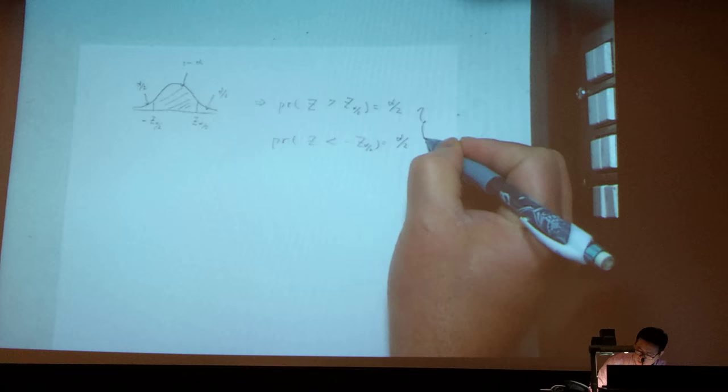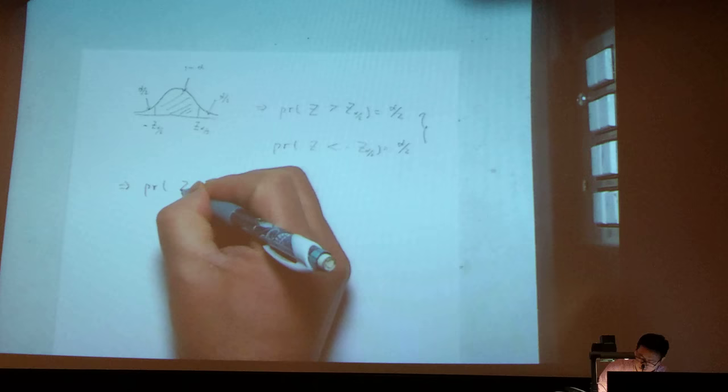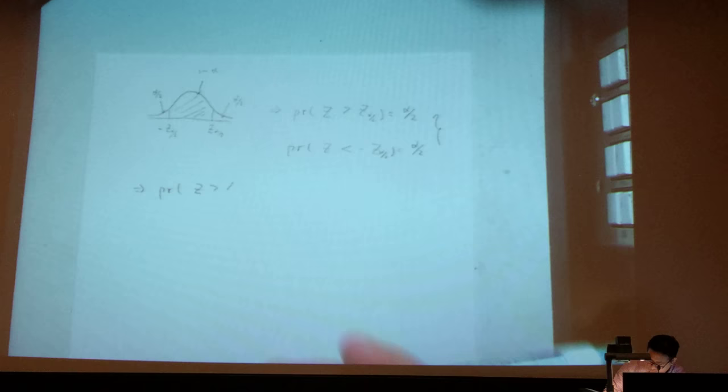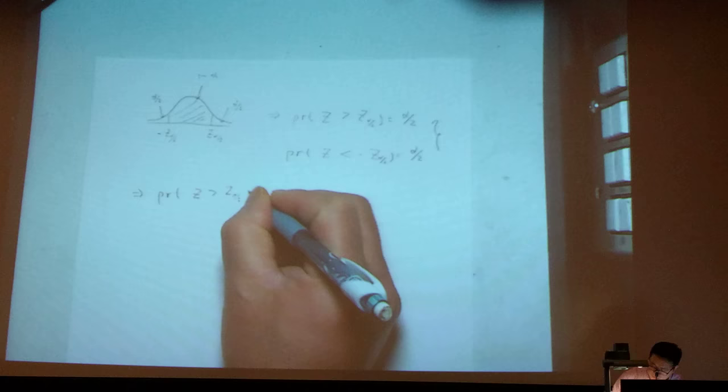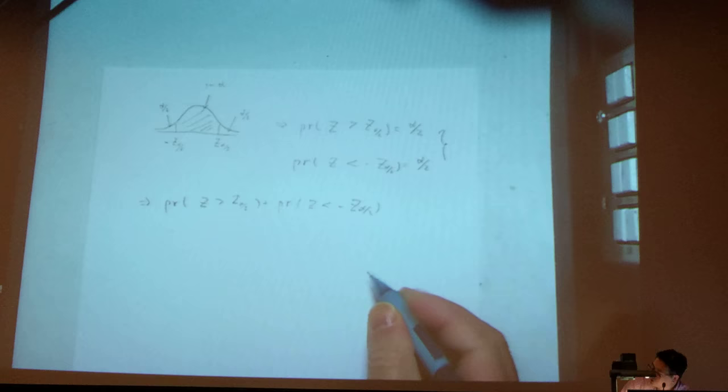If you integrate those two together, you get the probability that z is bigger than z alpha divided by 2 plus the probability that z is less than negative z alpha divided by 2. This one gives us alpha.